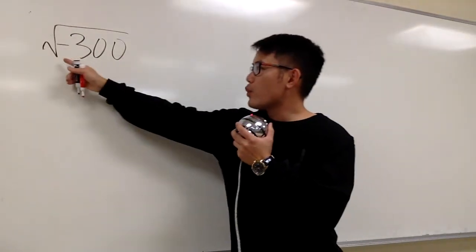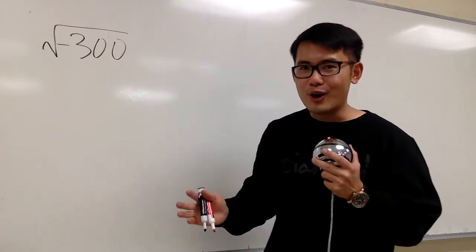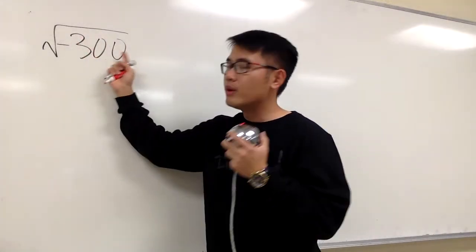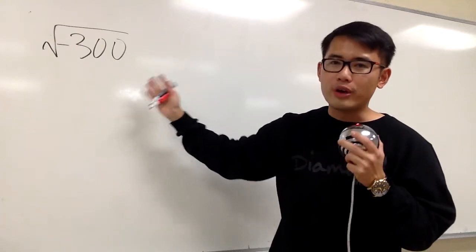So let's see how we can simplify square root of negative 300. And yes, I know we have a negative number inside of the square root, so this right here has no real value.